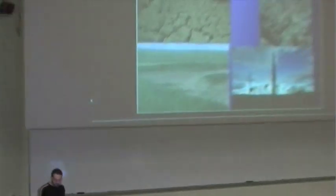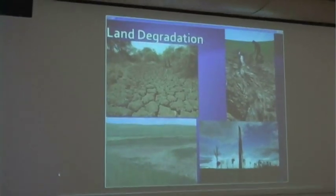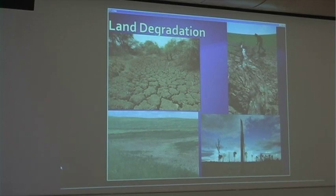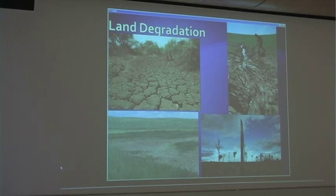So I will start with: what is land degradation? What is this problem that's facing us as humanity here on this globe? Degradation is a change in the land which will reduce its productivity or its ability to grow vegetation on it. A very important concept is that it's anthropogenic, which means it's caused by humans. Changes happen in the land which are natural, but this type of degradation is always anthropogenic.